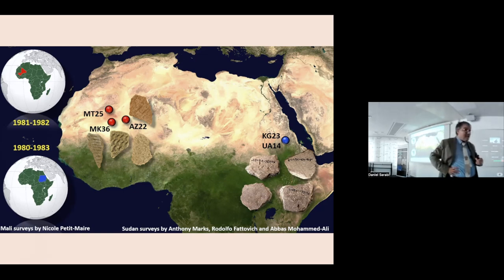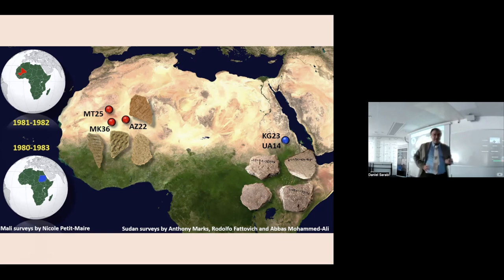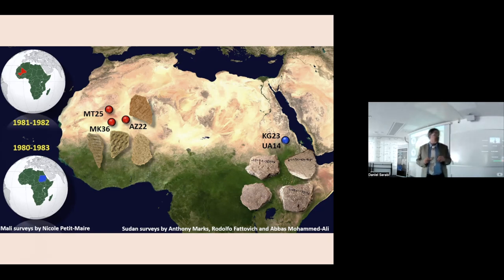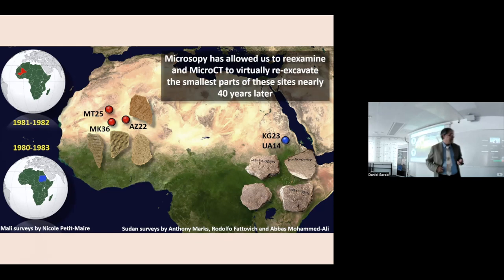We'll talk about some sites in eastern Sudan, especially KG-23, and sites in northern Mali, especially AZ-22 and MK-36. All these ceramic collections are old in the sense that the archaeology was done in the early 1980s. KG-23 was excavated by a Southern Methodist University collaboration in the early 80s, and those ceramics ended up at the British Museum. The work in Mali was by a French team working on paleoenvironment and climate change — they collected lots of surface material that was sitting in storerooms in Toulouse. We were able to re-examine these ceramics and get new information out of sites that had long been finished.